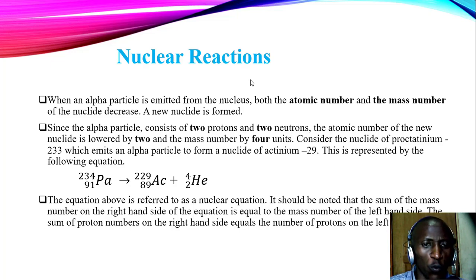Now since alpha particles consist of two protons and two neutrons we say that the atomic number of the new nuclei will be lowered by two and the mass number will be lowered by four units. Take for example palladium-234-91 it decays to give actinium-229-89 releasing a helium atom which is an alpha particle. You realize the new nuclei has a mass less four units. The atomic mass is 229 less from 234. Also the atomic number is 89. A drop or a decrease by 2.